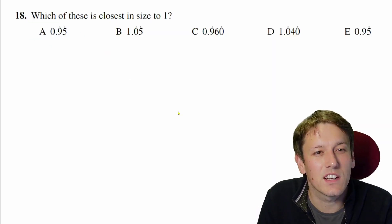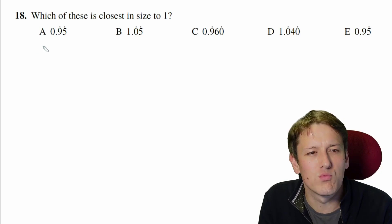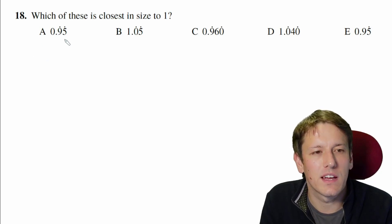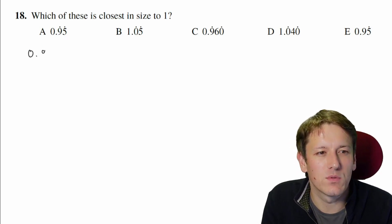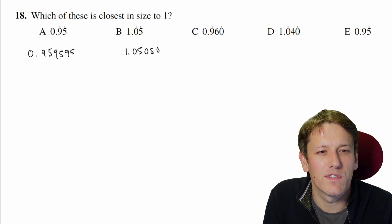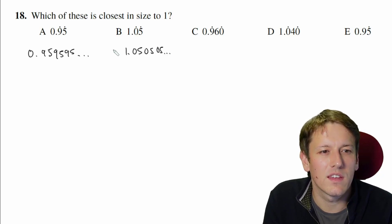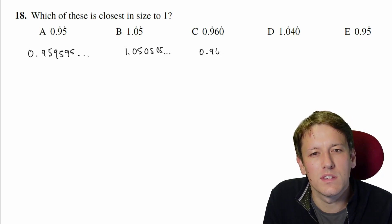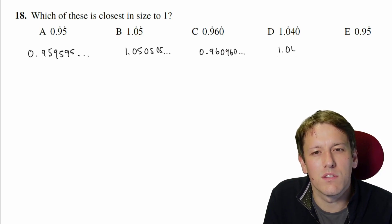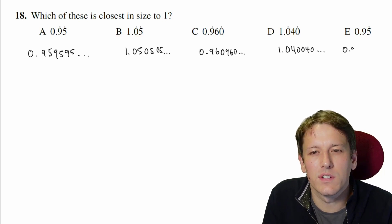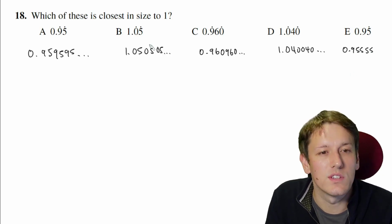Question 18, which of these is closest in size to 1? So let's just write these out a little bit more, make sure we understand what these recurring decimals mean. So this one will be 0.959595, etc. This one's going to be 1.050505, etc. This one's going to be 0.960960. This one's going to be 1.040040. This final one is going to be 0.955555, like that. So we want to know which of these is closest to 1.